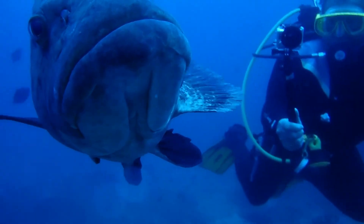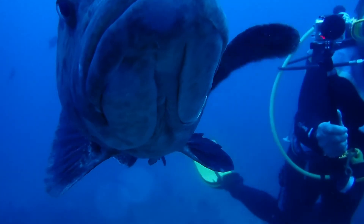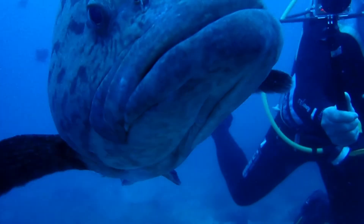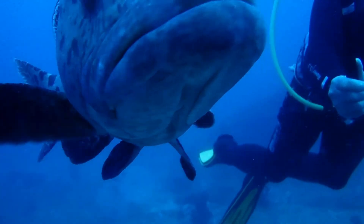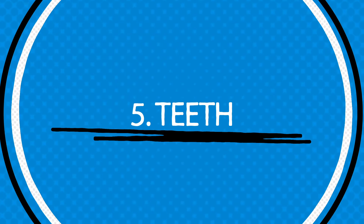Bony fish do possess a swim bladder — a gas-filled organ whose size they can adjust to control their buoyancy — which means they can hover motionless in the water. As we can see from the potato grouper here, you can see him hovering neutrally buoyant in the water to interact with us divers.